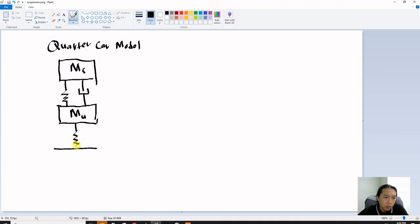Since we neglect the damping of a tire, so this one is your displacement for sprung mass, and this one is your displacement for unsprung mass.